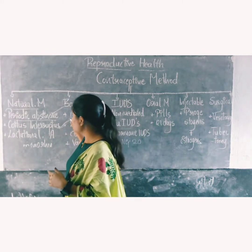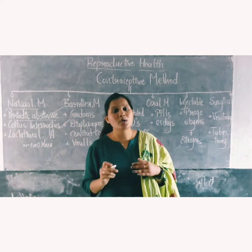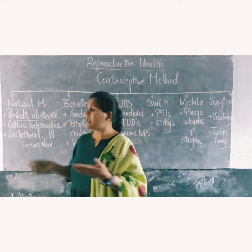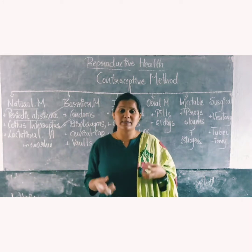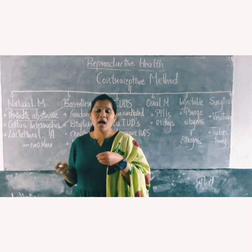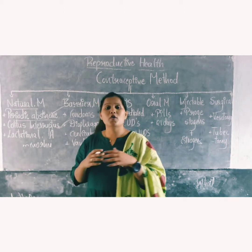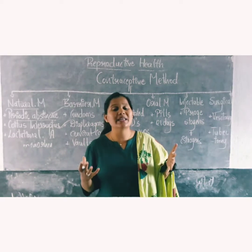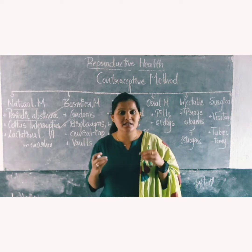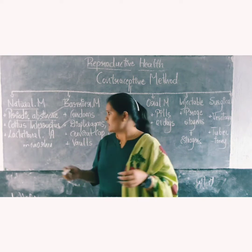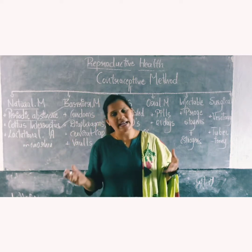The next natural method is coitus interruptus, also called withdrawal. In this case, the male removes his penis from the vagina before ejaculation takes place, in order to prevent insemination so that the sperm does not enter the female genital tract, and conception does not take place.